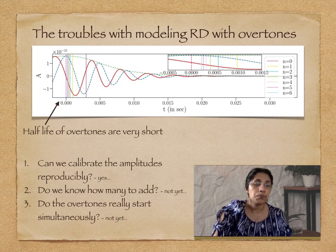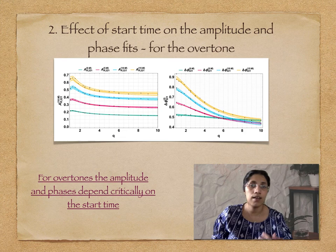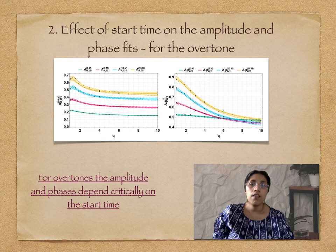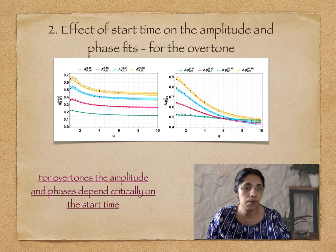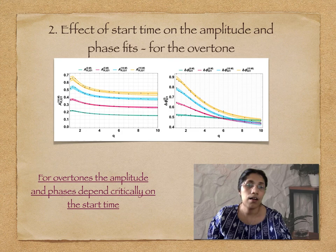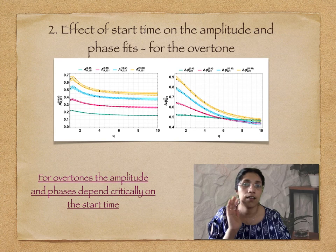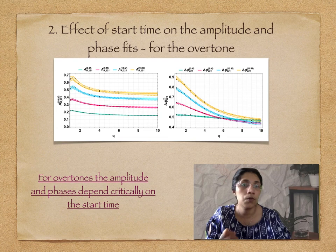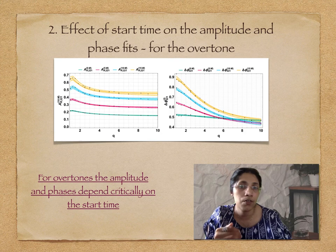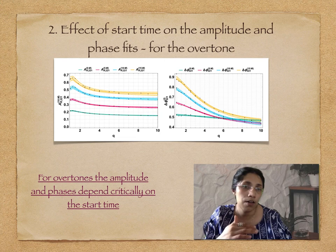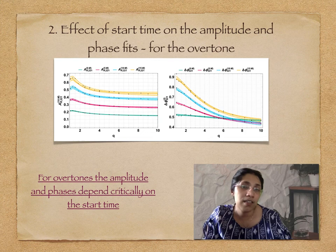Assuming the ringdown is composed of the dominant mode and a single subdominant N=1 overtone starting simultaneously, we look at the effect of start time on the fitting of amplitude ratio and phase difference by calibrating to numerical relativity waveforms. We report rescaled amplitudes. Four lines are shown: green corresponds to fitting at merger, red to merger plus 5M, blue to merger plus 10M, and yellow to merger plus 15M. Unlike angular modes, for overtones the amplitude ratio changes significantly depending on where you start the fitting—the four curves don't overlap for either phase or amplitude. Overtone amplitudes and phases are strongly dependent on the start time.